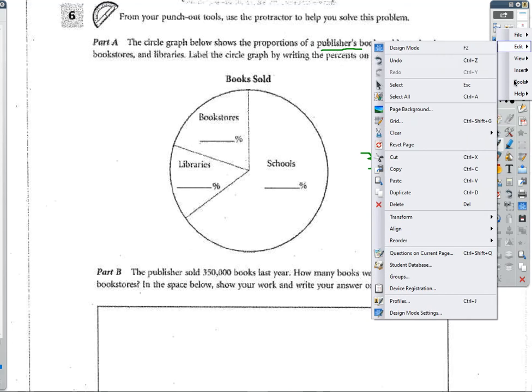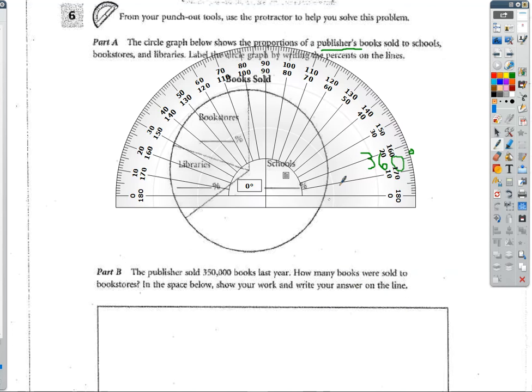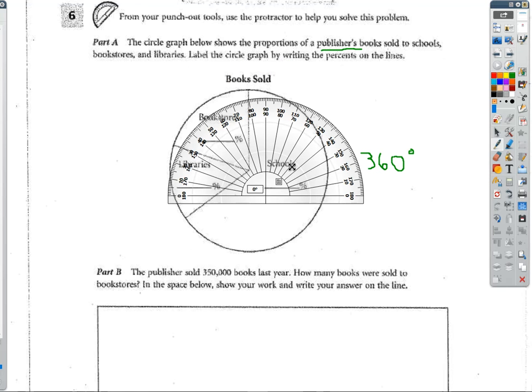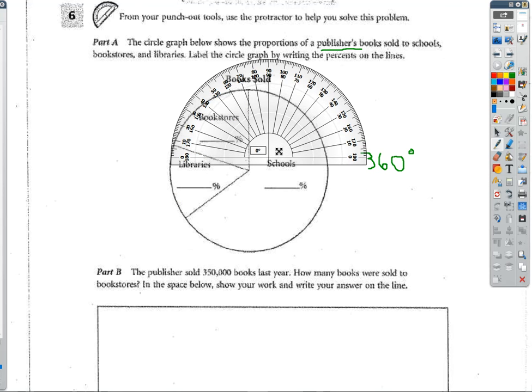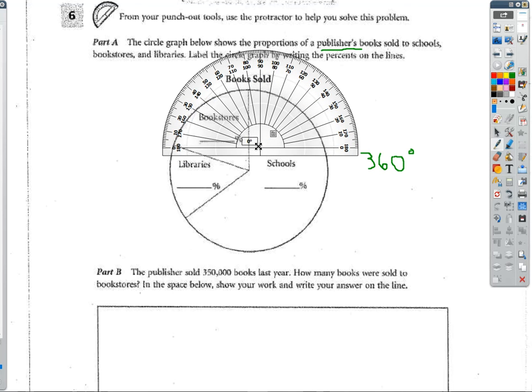But to do the rest, I really need a protractor. So I'm going to pull out my protractor. Oh, my goodness, that is a big protractor. I'm going to shrink it as far as it goes. So to use this protractor, all protractors will have some sort of zero line.